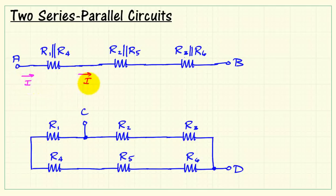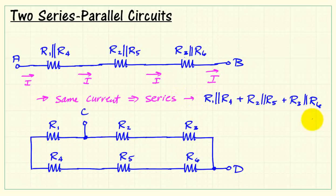Now at this point, we observe that the current I entering the left side of the chain of resistors here passes through each one of these resistors. Since all of these resistors share the same current, they are in series. We then write that the equivalent resistance between terminals A and B is the sum of those parallel resistor combinations.